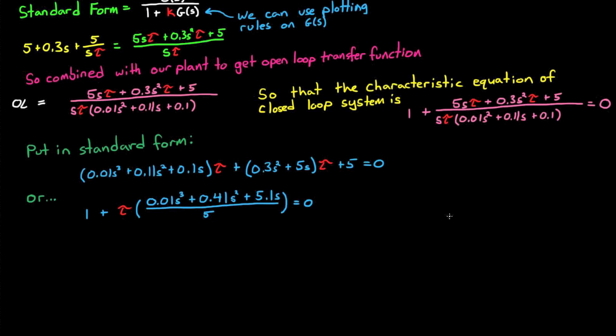However you have to keep in mind that we're just looking at the characteristic equation right now, or the denominator of the closed loop system. We would have also divided the numerator by 5 as well, so that the total transfer function would remain unchanged. But since at this moment we're only concerned with the poles of the system, I'm only showing the characteristic equation.